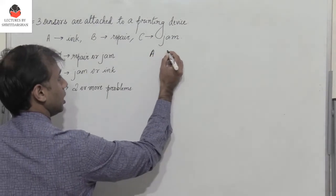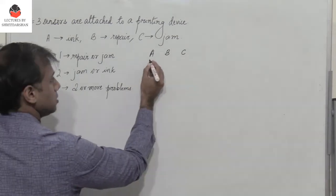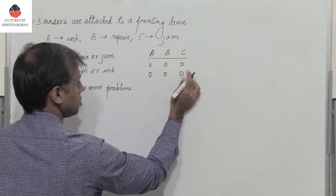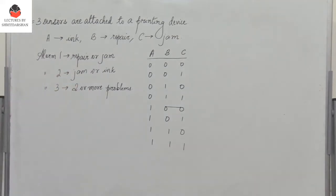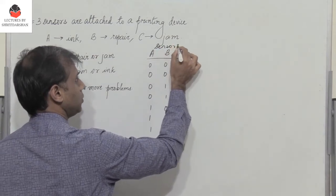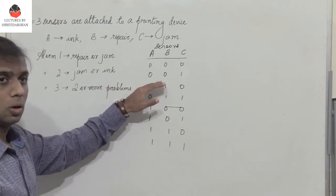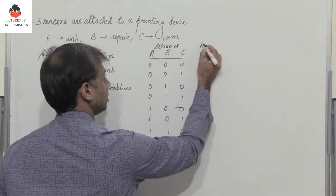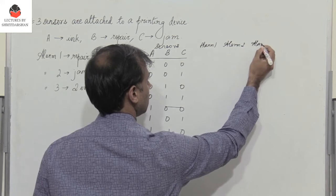So let us write the truth table. We have three sensors A, B, and C. Since we have three inputs, there are eight combinations — 0,0,0 to 1,1,1. The outputs correspond to these three inputs: alarm 1, alarm 2, and alarm 3.